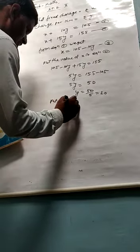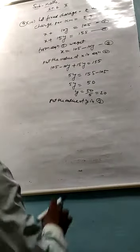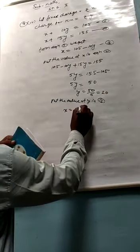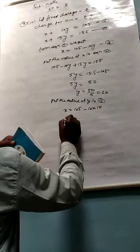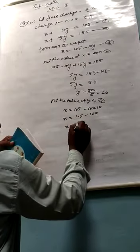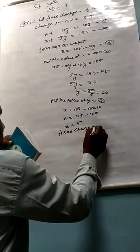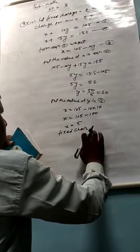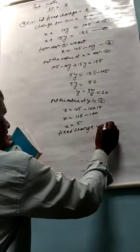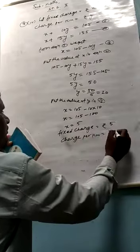Now y value is 10. Put the value of y in equation 1. When we put the value of y, so x equals 105 minus 10 times 10, equals 105 minus 100, x equals 5. x ki value, fixed charge kitna hoga? Fixed charge rupees 5. Charge per kilometer, y value rupees 10.